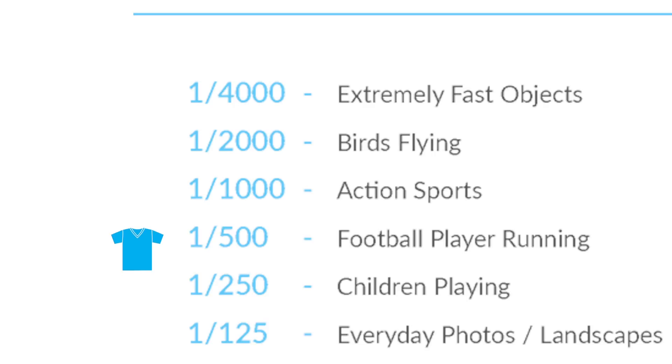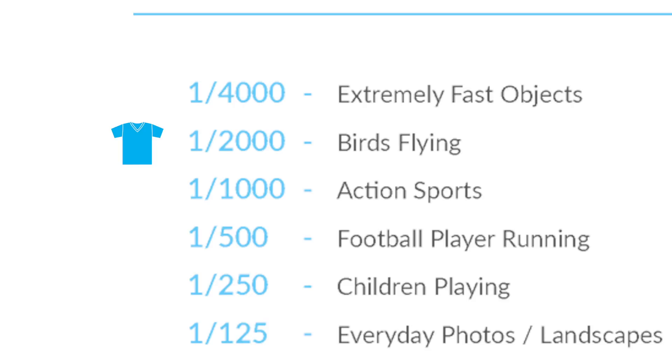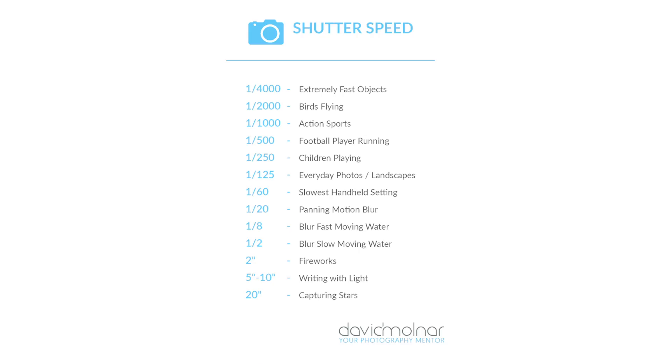1/500th of a second is for action sports like a football player running. For something moving even faster — like someone swinging a baseball bat — you'll want to go faster. 1/1000th of a second works for birds in flight. As shown in previous example lessons, 1/2000th of a second is for extremely fast moving objects like a race car. These are great starting places to set your shutter speed to capture motion blur, allow light to soak in, or freeze motion.